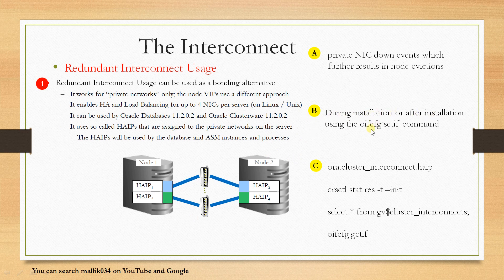You can define HAIP during installation or after installation using the command 'oifcfg set if'. This concept works for private networks only. It enables high availability and load balancing for up to 4 NICs per server. I already have 2 NICs here, and I can add 2 more NICs at any point. It allows configuring up to 4 private NICs for HA and load balancing on one server.